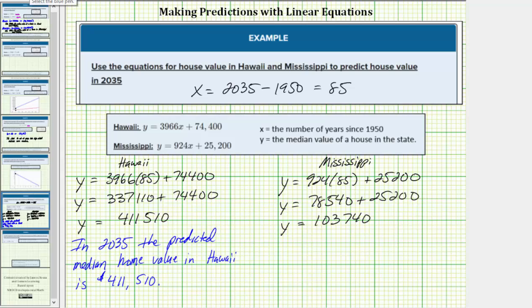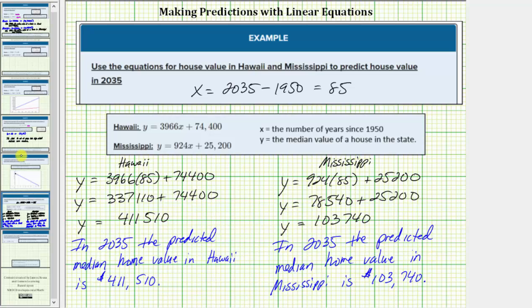Which means in 2035, the predicted median home value in Mississippi is $103,740. I hope you found this helpful.